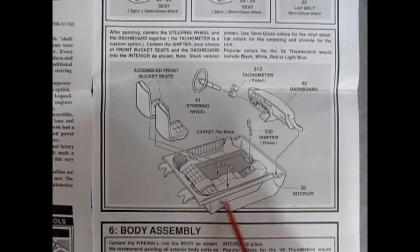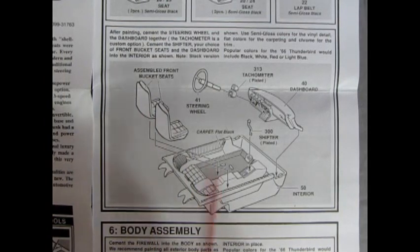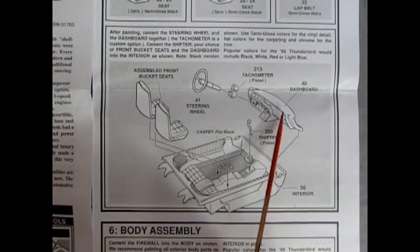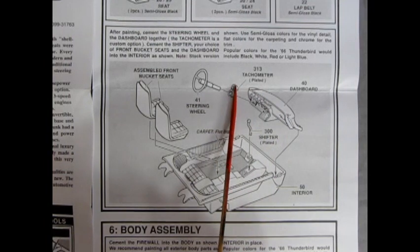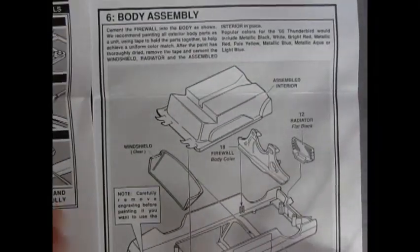And then there's our interior, again molded as a bucket, which is typical for this era. The front custom bucket seat, bucket seats popping in here. There's our dashboard. You get a tachometer and a steering wheel and a shifter. Both of these pieces here are plated.